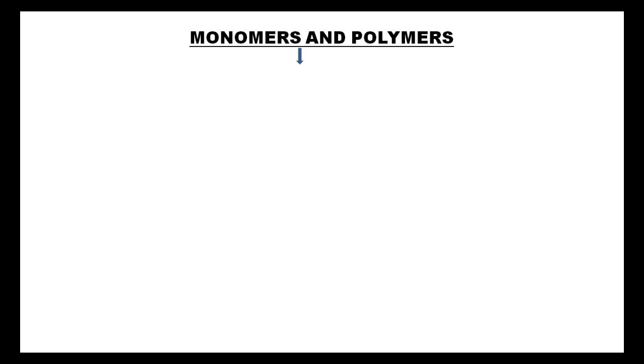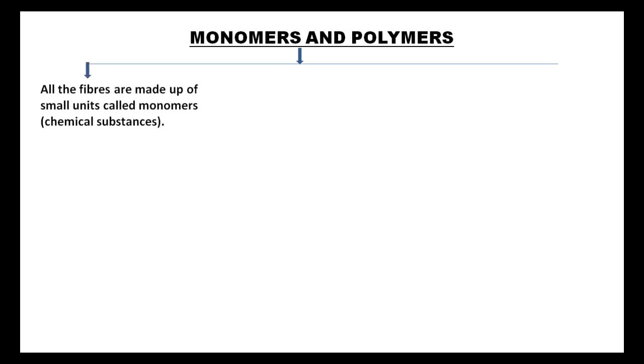Hello friends, in this video we are going to study monomers and polymers. Fibers are fine thread-like structures. All the fibers are made up of small units called monomers. Monomers are chemical substances, and thousands of monomers join together to form a large unit called a polymer.